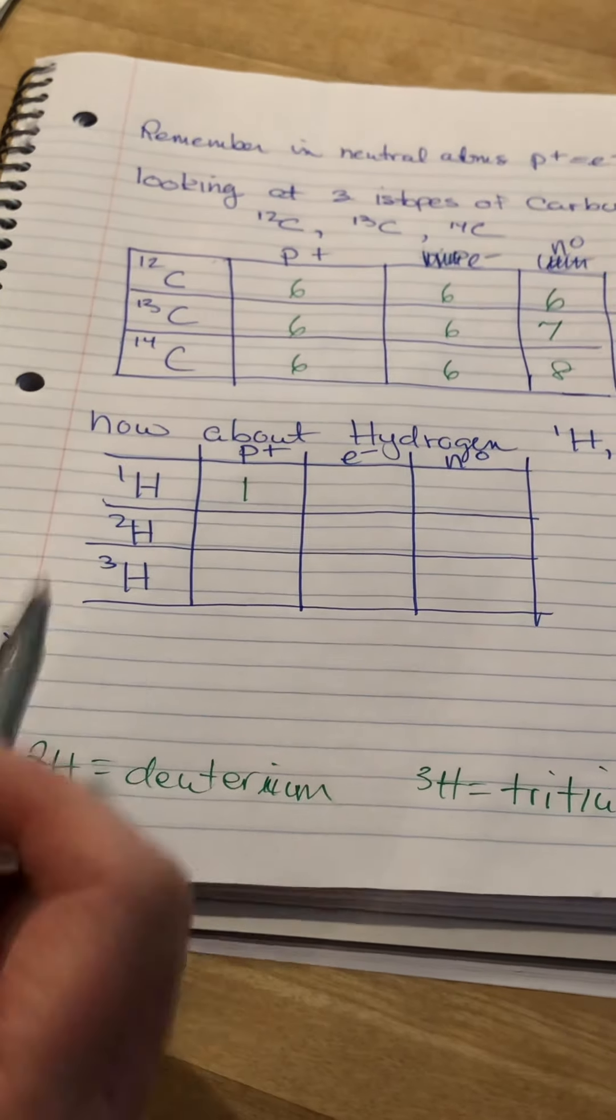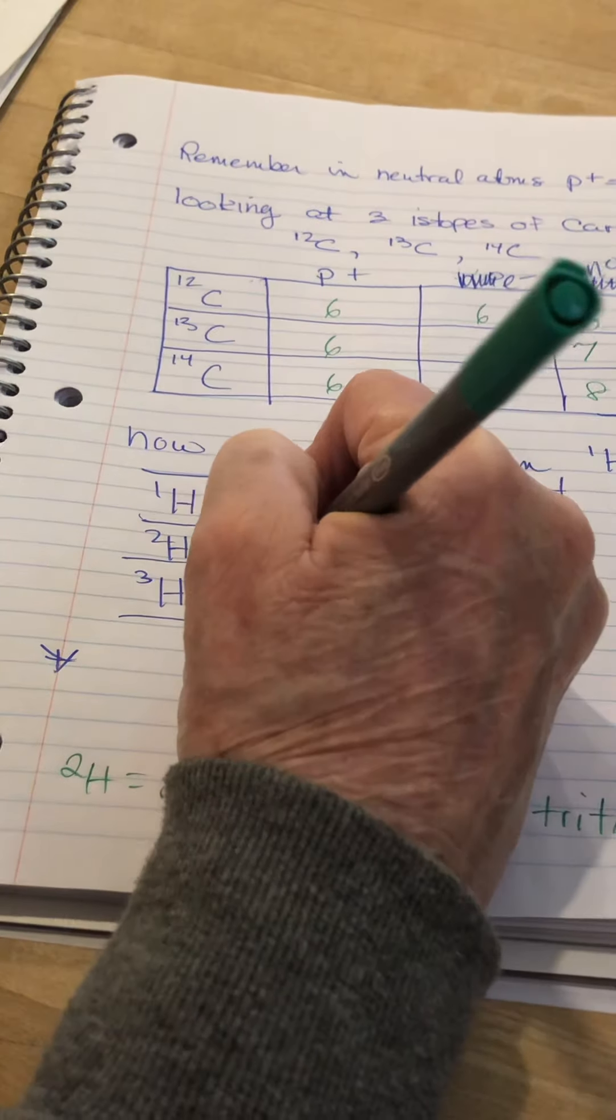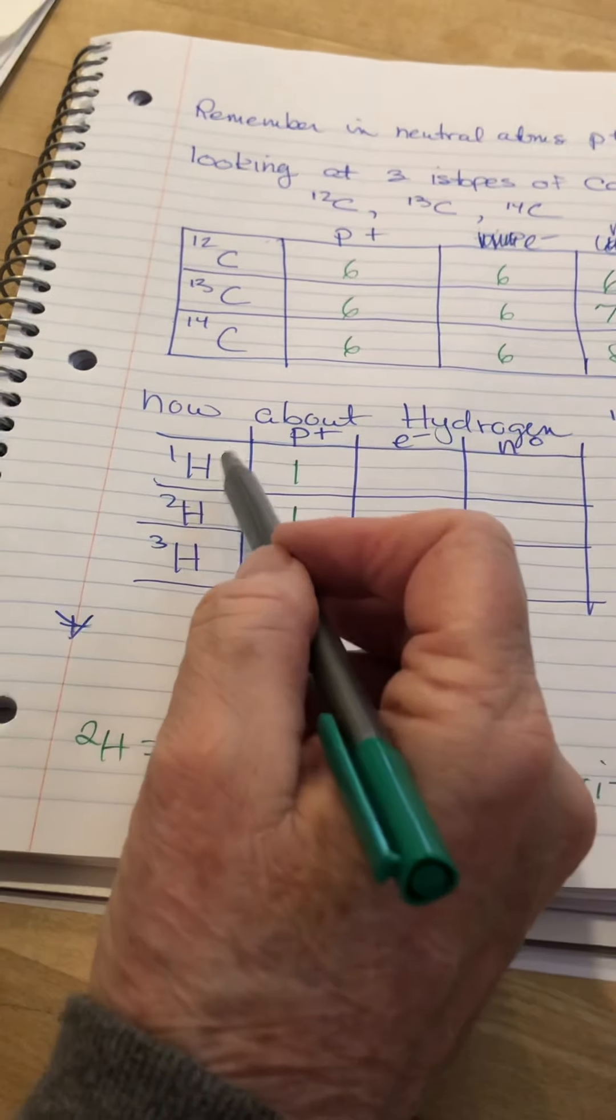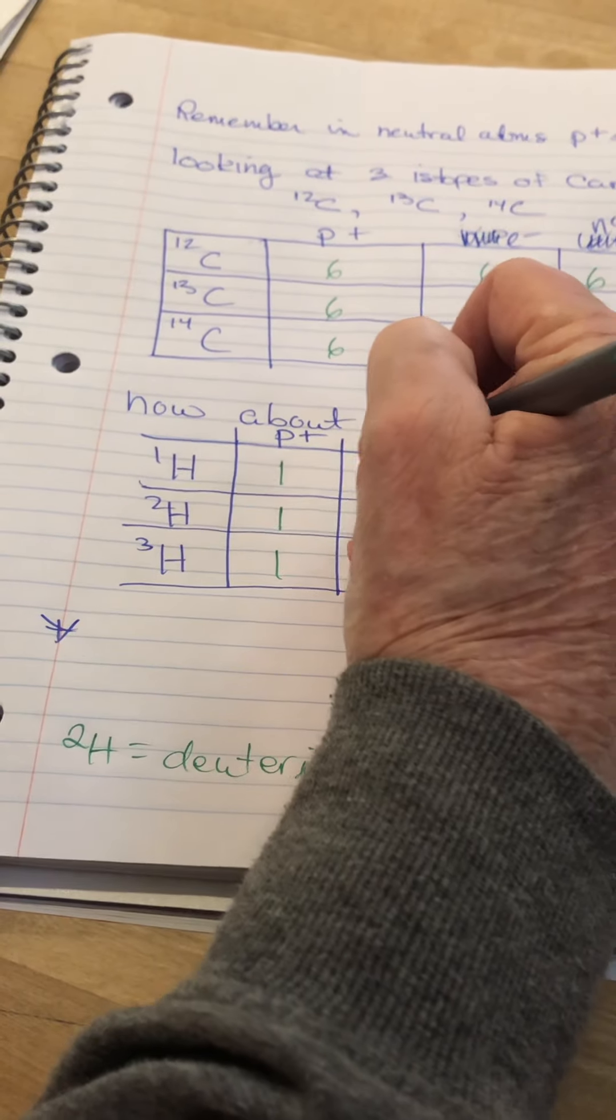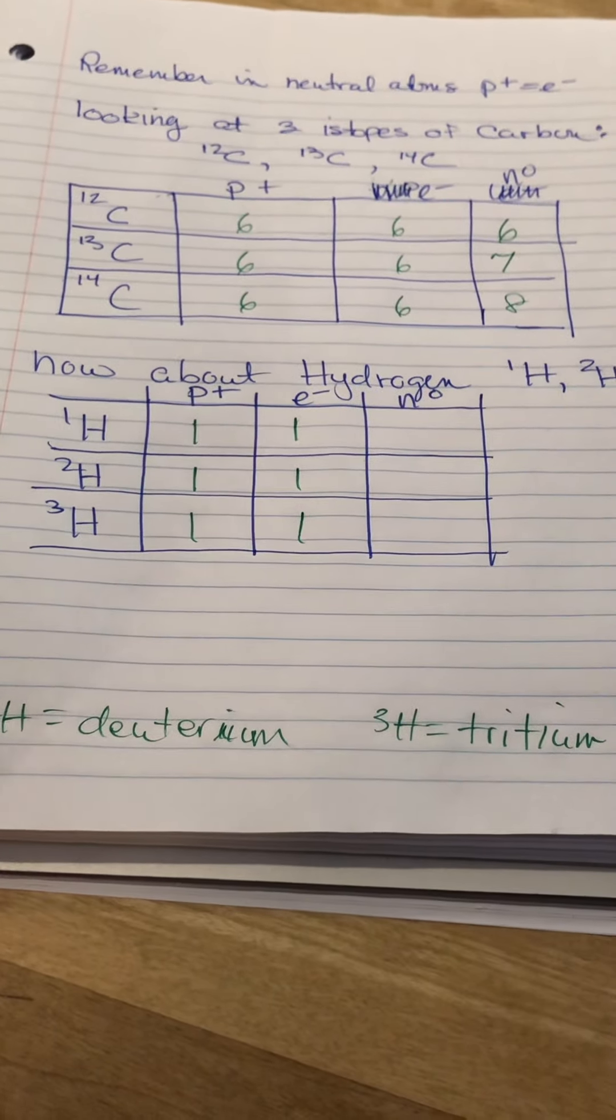But these are all isotopes of hydrogen. So, they all have one proton. How many electrons do they have? Well, there's no charge up here, meaning they're all neutral. So, they all have to have one electron. See? I told you this was easy.